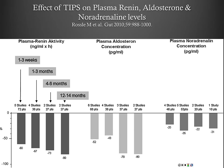The real underlying mechanism is the RAS system. After TIPS, they looked at renin, aldosterone, and noradrenaline — and all of those came down significantly in the setting of a TIPS.